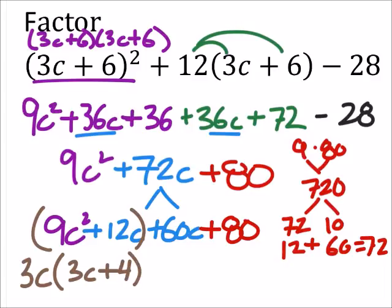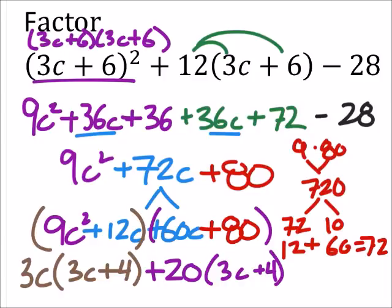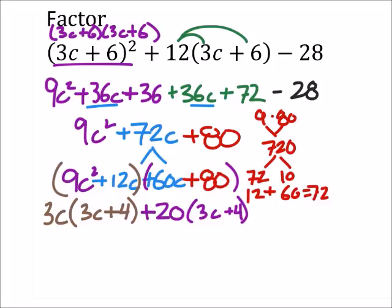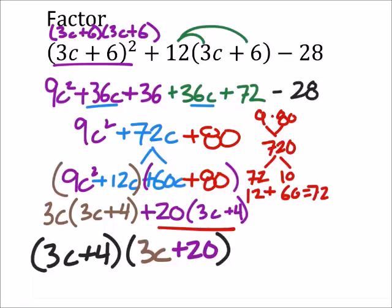And then on the second set, 60 and 80, so 20, plus 20. And then we've got 3c plus 4. Oh, that's good. And this one's going to work out really good. We've got the 3c plus 4 that we factored out from both expressions, and then we also have the 3c plus 20. Yeah, that's good.